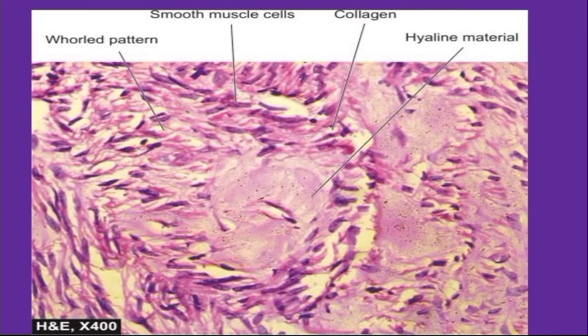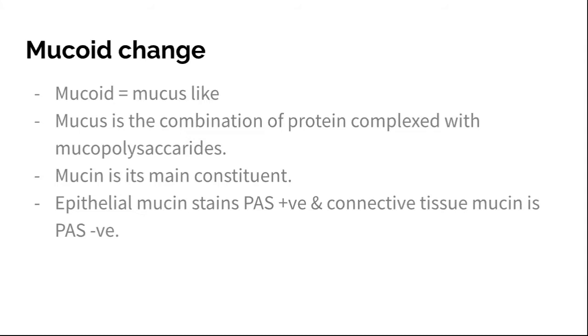This is a slide from leiomyoma uterus. You can see hyaline material inside, plus collagen deposition, smooth muscle cells, and it shows a whorled pattern.